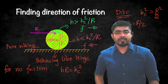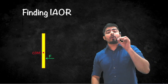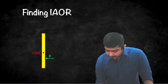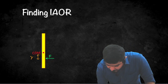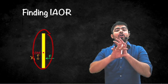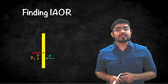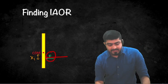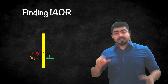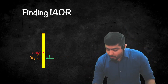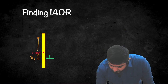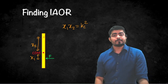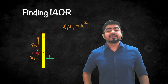Now, how to find the instantaneous axis of rotation — the point about which a rod appears to rotate at any given moment. If a force is applied at a distance x1 from the center of mass on a rod that is free (not hinged anywhere), then at that instant the rod appears to rotate about a point which is x2 distance away from the center of mass on the other side, such that x1·x2 = kc². So the same sweet spot formula gives you the instantaneous axis of rotation.